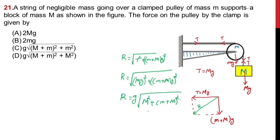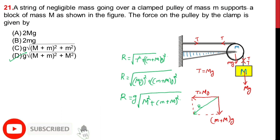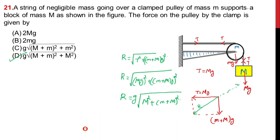Option D is the right answer. The resultant force due to tension and (m + M)g acts in this direction, and the same force must be applied by the clamp on the pulley. So this is the final answer. Hope you understood this one. Thank you.